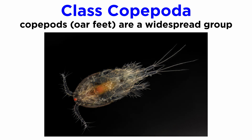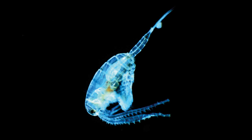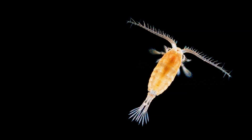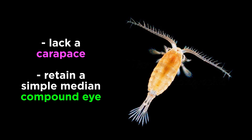Next up is class Copepoda, commonly known as copepods, though their name means 'oar feet.' They are a widespread group of small crustaceans, most just a few millimeters in length, and are usually teardrop-shaped with large antennae. However, their morphology varies considerably — from bioluminescent deep-sea copepods to parasitic forms like Lernaeophtheirus salmonis and the cod worm. Regardless of morphological divergences, all copepods lack a carapace, and many adults retain a simple median compound eye.